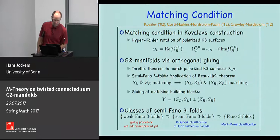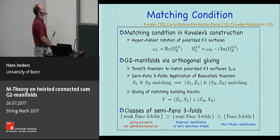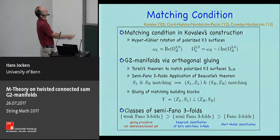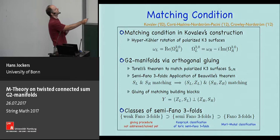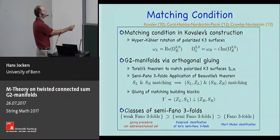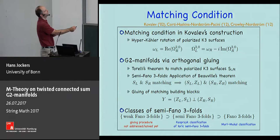The matching condition in Kovalev's construction can be formulated Hodge-theoretically. The K3 surfaces in the asymptotic regions are polarized because they inherit a Kähler structure from the Calabi-Yau. They need to be identified such that the Kähler form on the left equals the real part of the holomorphic (3,0)-form on the right, and the holomorphic (2,0)-form on the left arises from a certain combination on the right. Having formulated this Hodge-theoretical statement we can try to carry out the gluing.